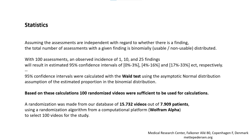Before conducting the study, we sought guidance from our statistician to determine how large a sample size was needed to document the findings. He calculated the 95% confidence intervals with various sample sizes and concluded that a sample size of 100 would be sufficient. The results of his calculations are shown here. To randomize the selection process, a randomization algorithm from a computational platform was used.